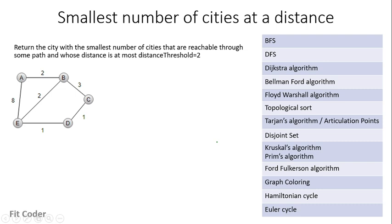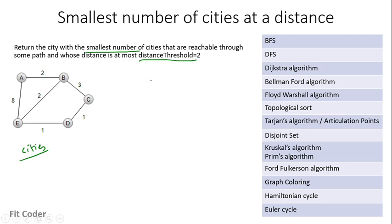The next question is smallest number of cities at a distance. We are given a network of cities with distances shown in the graph — distance between A and B is 2, between B and C is 3. We have to find the city with the smallest number of cities reachable through some path whose distance is at most the distance threshold, which equals 2. We can use the Floyd-Warshall algorithm here because it finds all-pairs shortest paths, computing shortest distances for all city combinations.